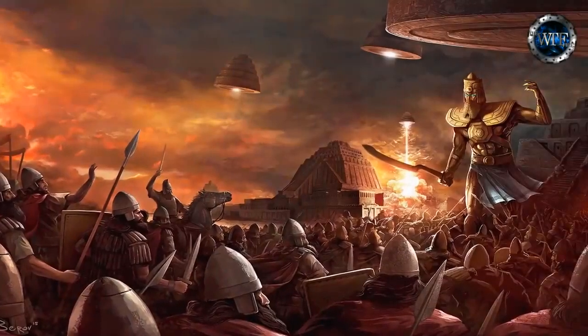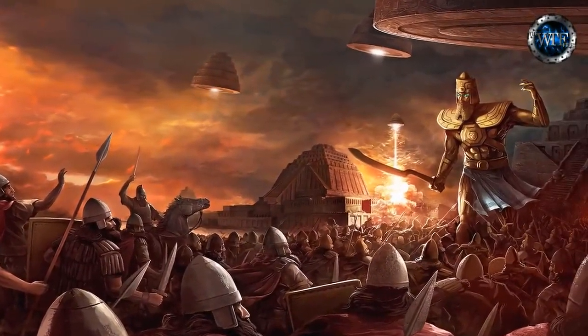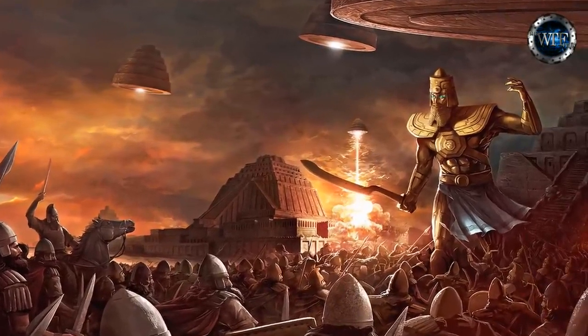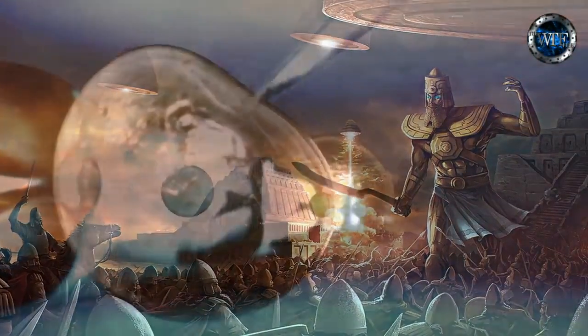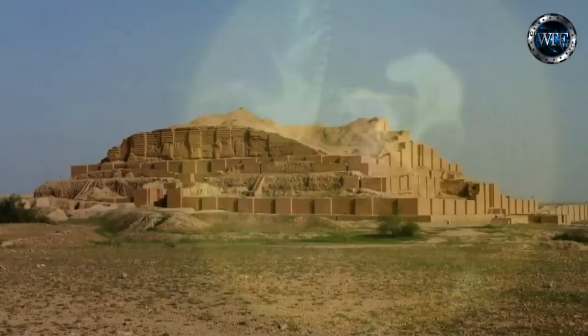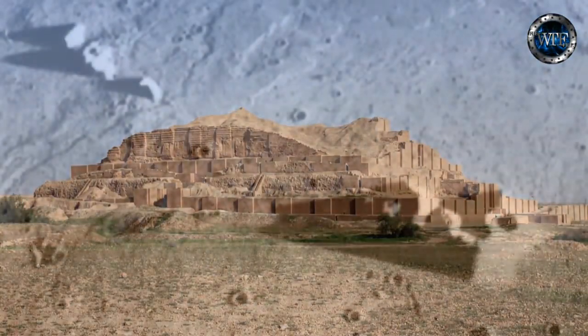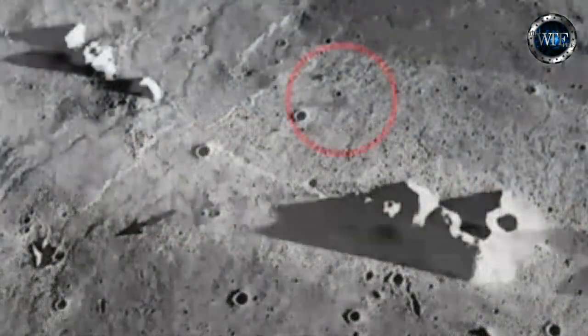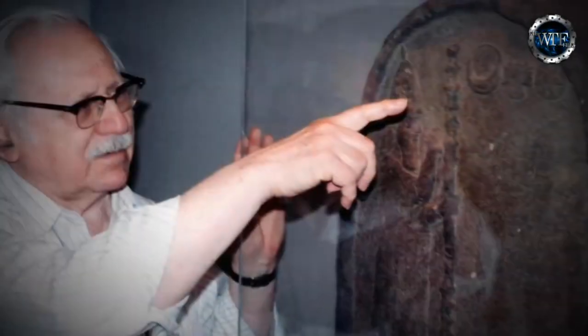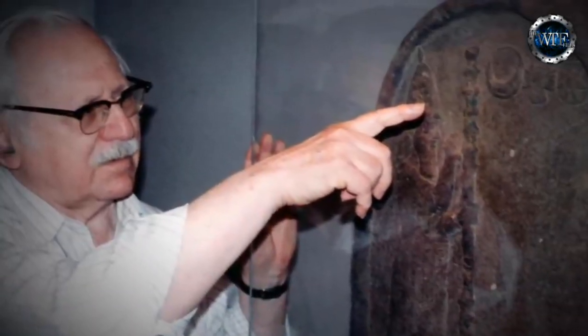Could it really be that a civilization capable of space travel almost half a million years ago visited this part of the solar system to not only mine Earth's precious resources, but to genetically manipulate human beings for their own needs, leaving behind monuments not only on Earth but on the moon and even on Mars as well? According to Zechariah Sitchin, in his translations of the Sumerian texts, the ancient Sumerian people say that is exactly what happened.